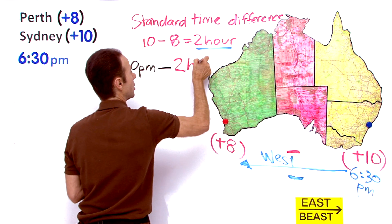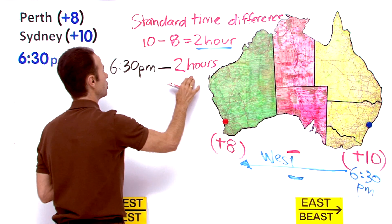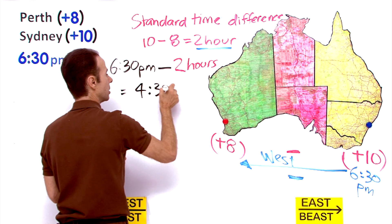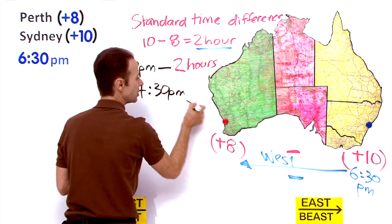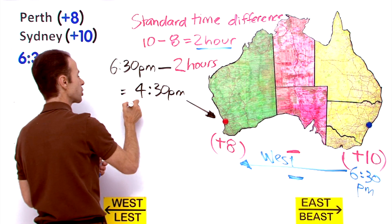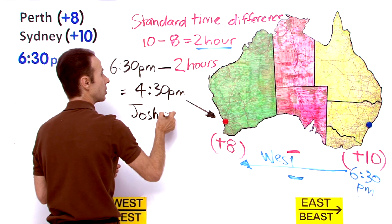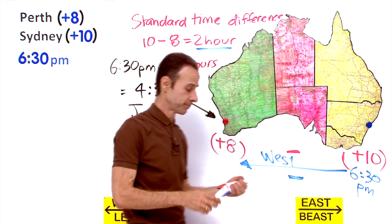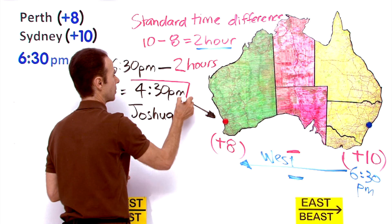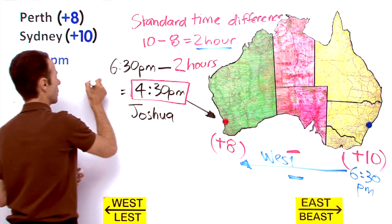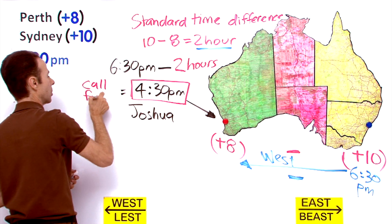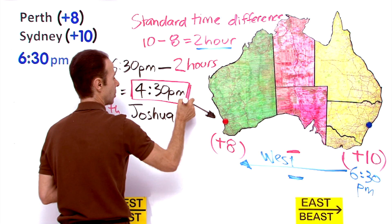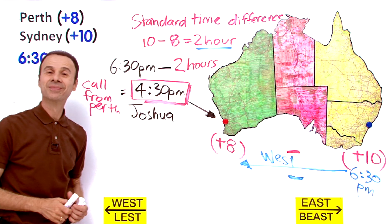6.30 minus 2 hours equals 4.30pm. So Joshua needs to call at 4.30pm Perth time so that it is 6.30pm in Sydney. Hope that helps!